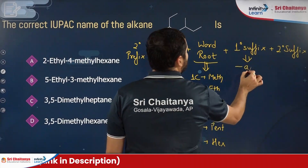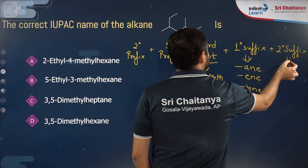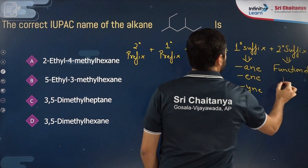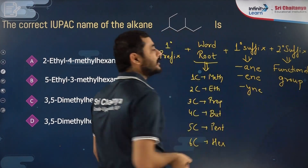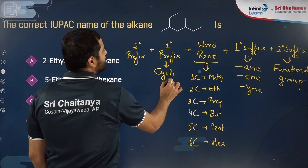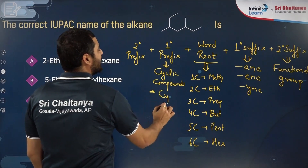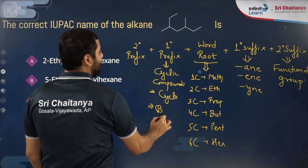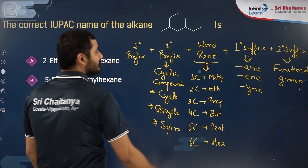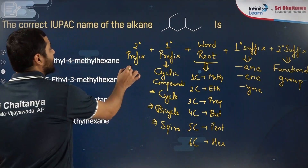The primary suffix represents alkane, alkene, or alkyne using -an, -en, and -yn respectively. The secondary suffix represents any functional group present, such as alcohol or carboxylic acid. The primary prefix is used for cyclic compounds — cyclo for one ring, bicyclo for bicyclic, and spiro for spiro compounds. It is only used if the compound is cyclic.